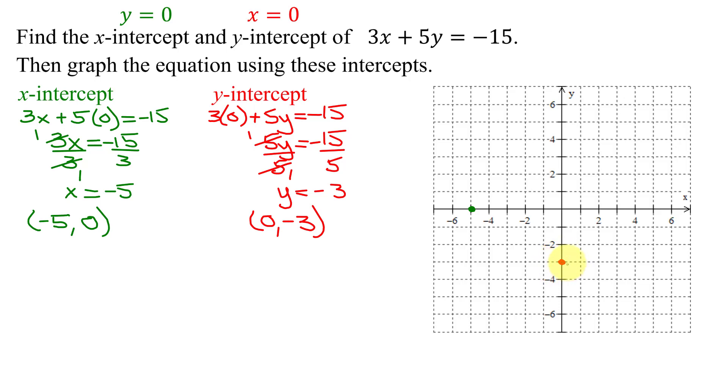So here is my y-intercept, and I could immediately draw the line going through those two points, but I prefer to get a third checkpoint, then I know my arithmetic is correct. Does it matter which checkpoint you pick? No.